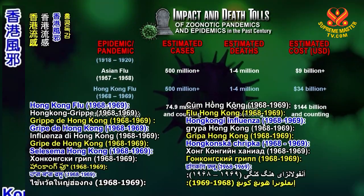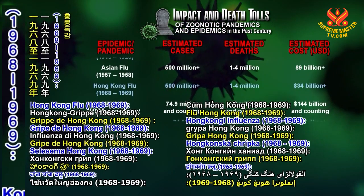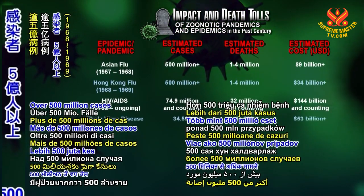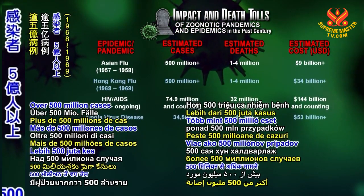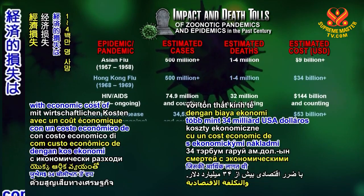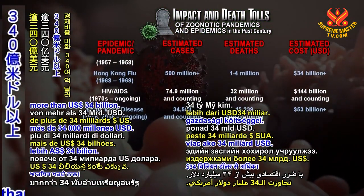Hong Kong flu, 1968–1969: over 500 million cases and 1 to 4 million deaths, with an economic cost of more than 34 billion U.S. dollars.